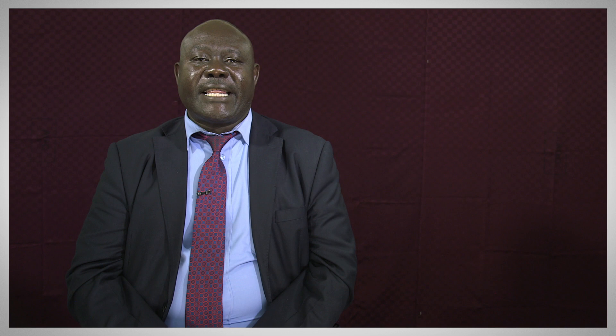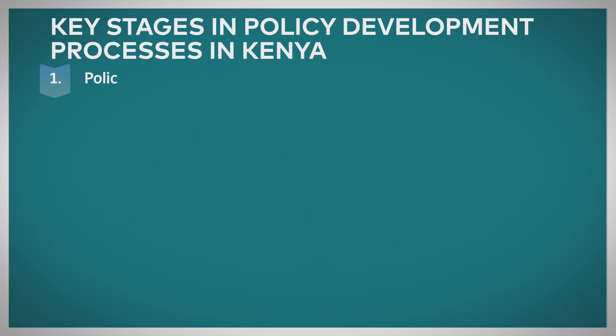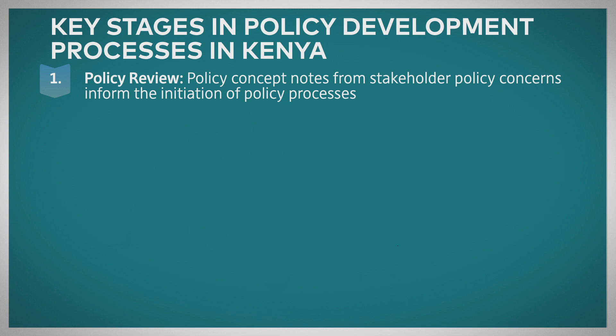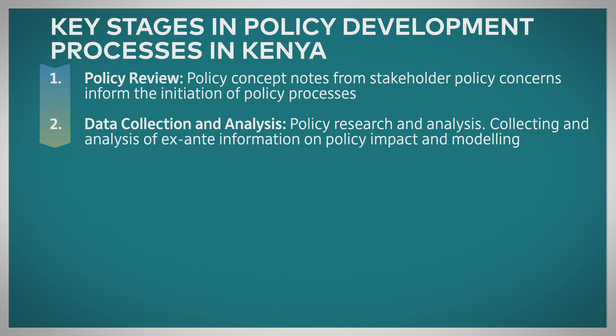Now we go further to what are the key steps in making policy processes. The first step is the policy review — identifying the issues. There has to be issues, and you see that they are good and worth making a policy. The next step is analysis of those issues, which is what we call the policy context analysis. You do some modeling and look at them in detail to see whether they are actually good enough to make a policy.